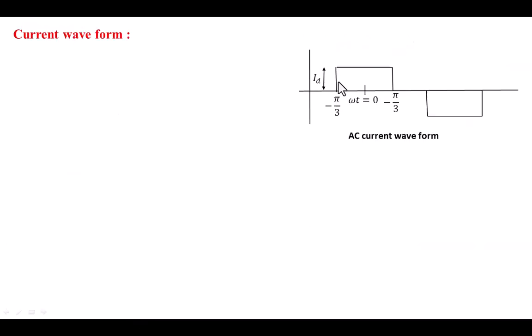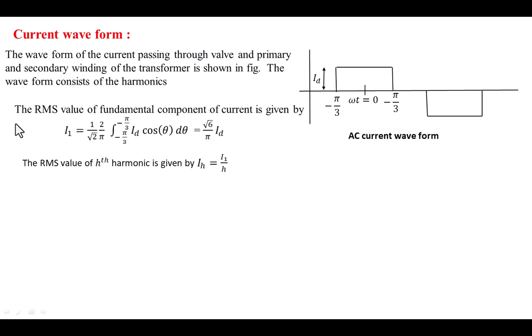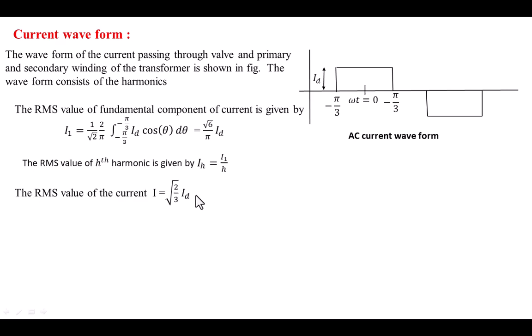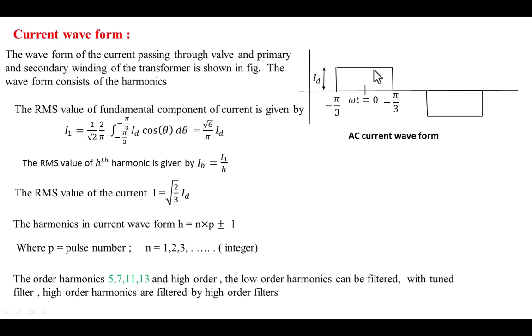Now the current waveform. This is the current waveform passing through the valve as well as the primary and secondary windings of the transformer. But this waveform is not a pure sinusoid — it also contains harmonics. The RMS value of the fundamental current for this waveform, from Fourier analysis, is: I1 = (1/√2) · (2/π) · ∫[−π/3 to π/3] Id · cos θ · dθ = (√6/π) · Id. This is the fundamental component RMS. The RMS value of the total current is √(2/3) · Id.